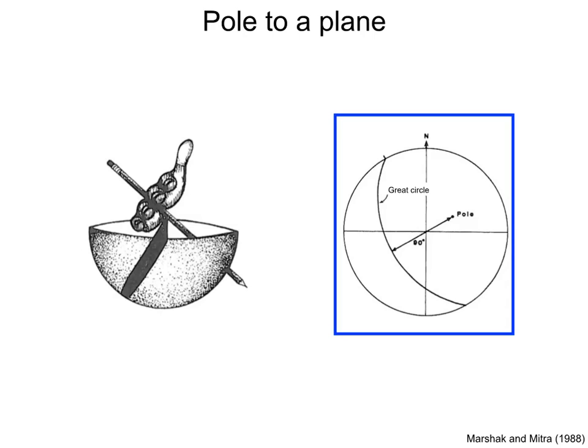If the plane is vertical, the pole is horizontal. If the plane is horizontal, the pole is vertical. A steep plane has a pole close to the primitive, and a gentle plane has a pole close to the center of the stereonet.